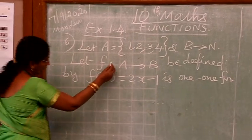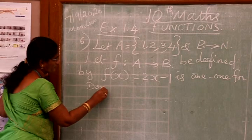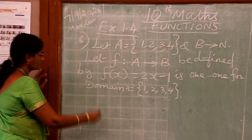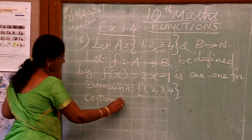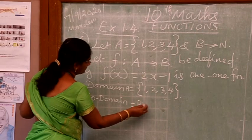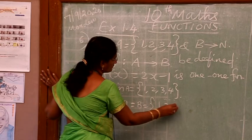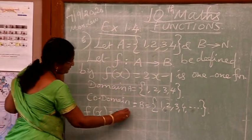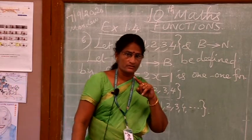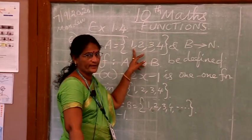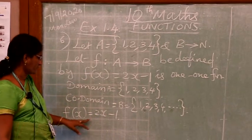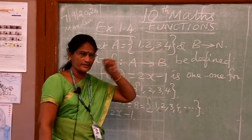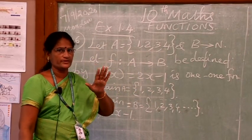See the domain here is the set A. See the function is F of x equal to 2x minus 1. So what we are going to do is we are substituting the numbers from set A in function F of x. Instead of x we are going to substitute these four numbers, then you will find the answer, that answers will be the range.